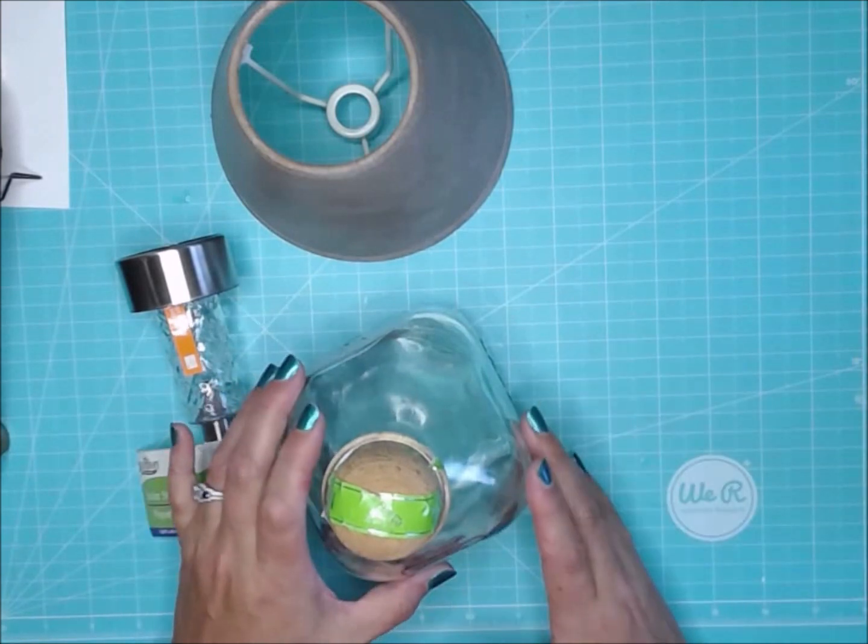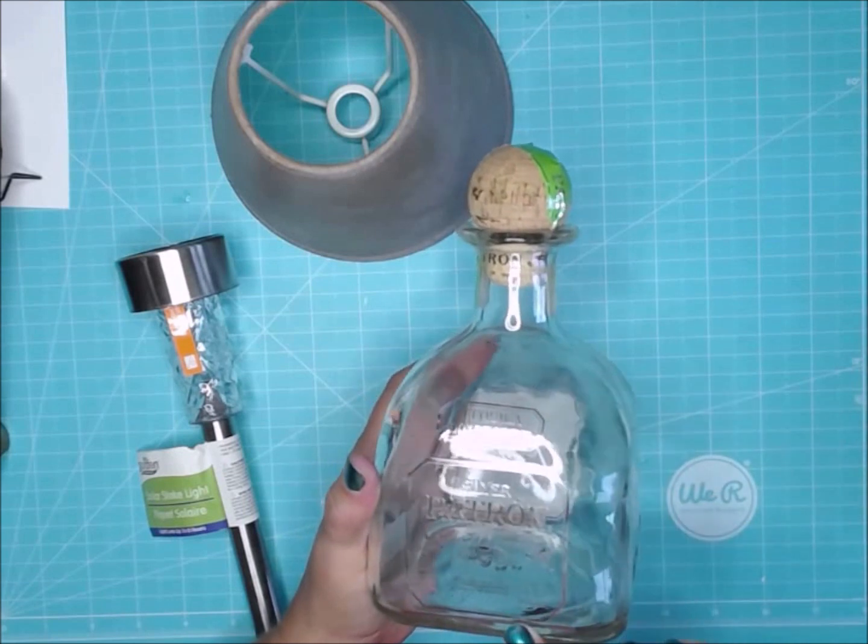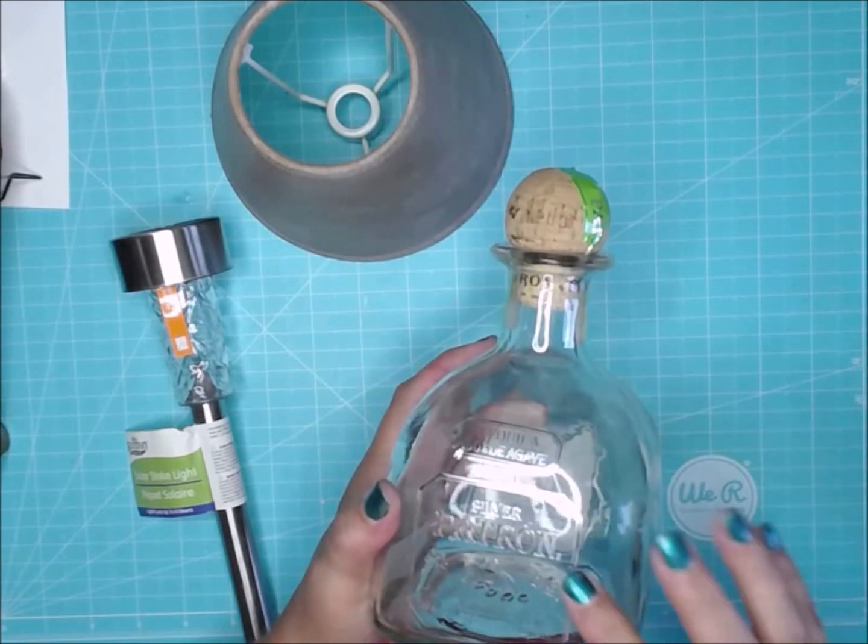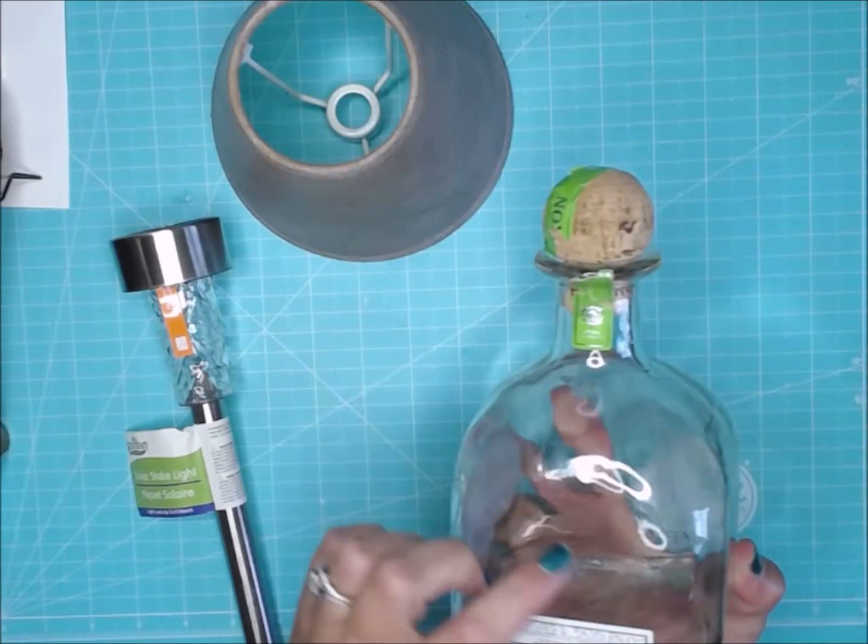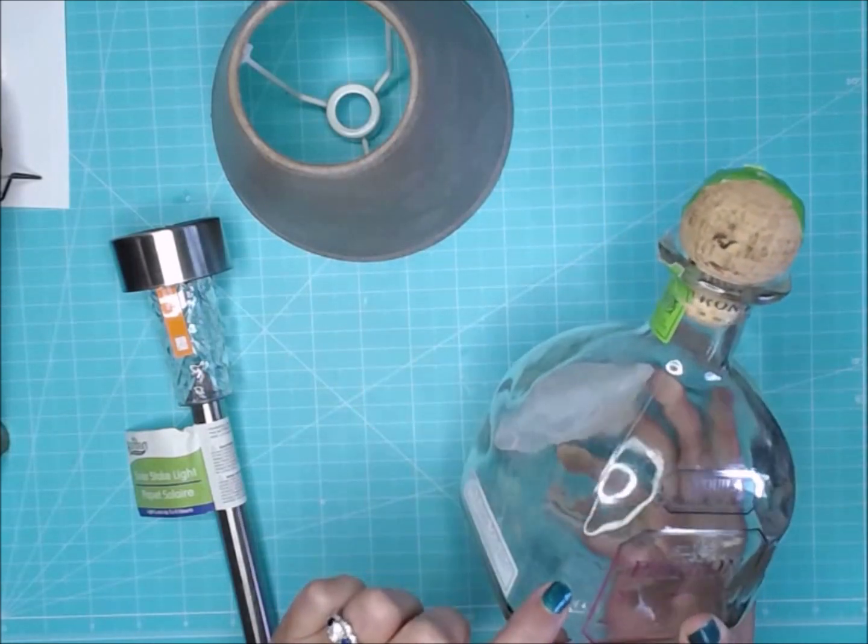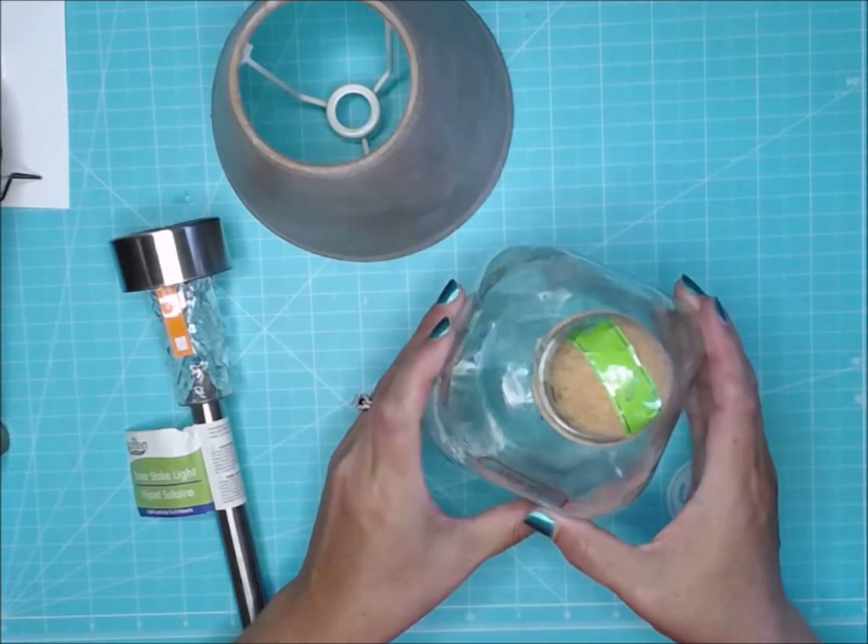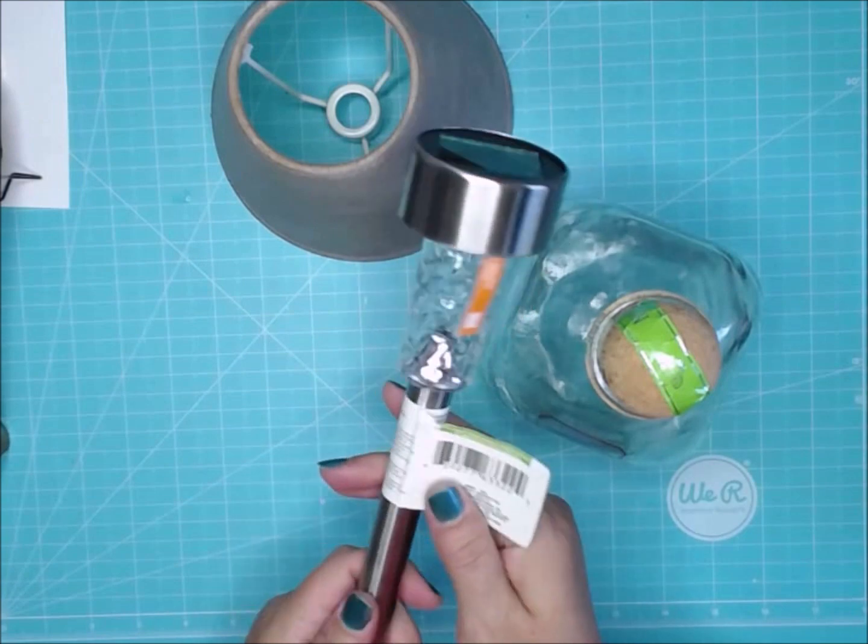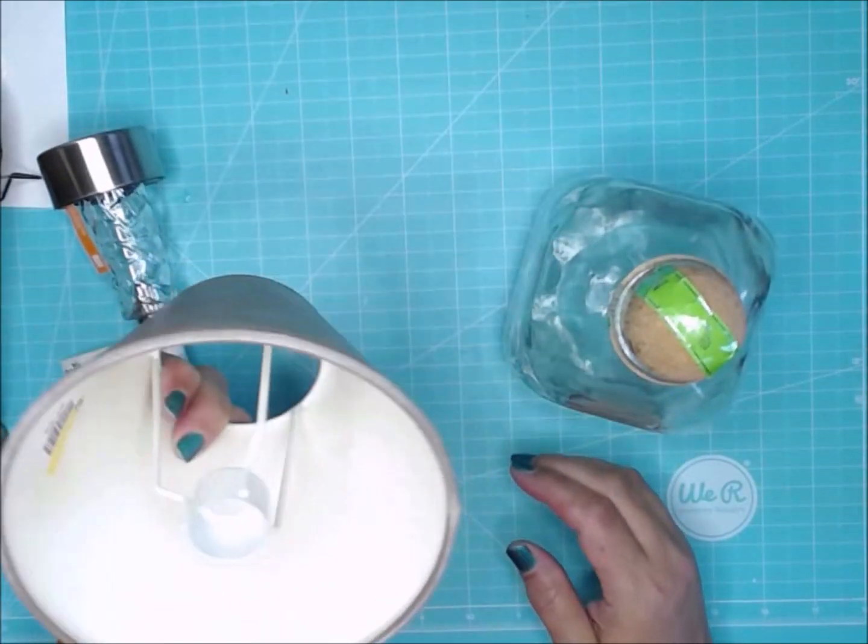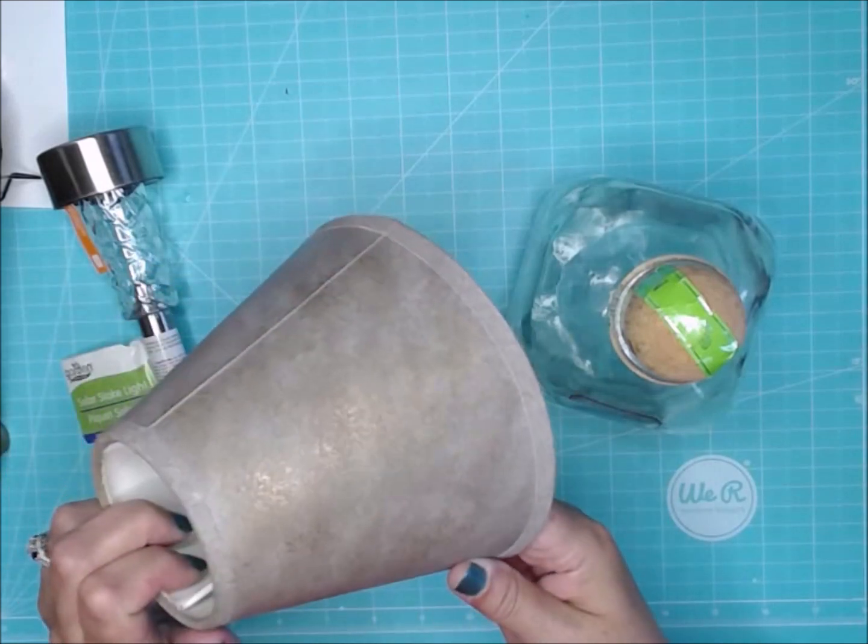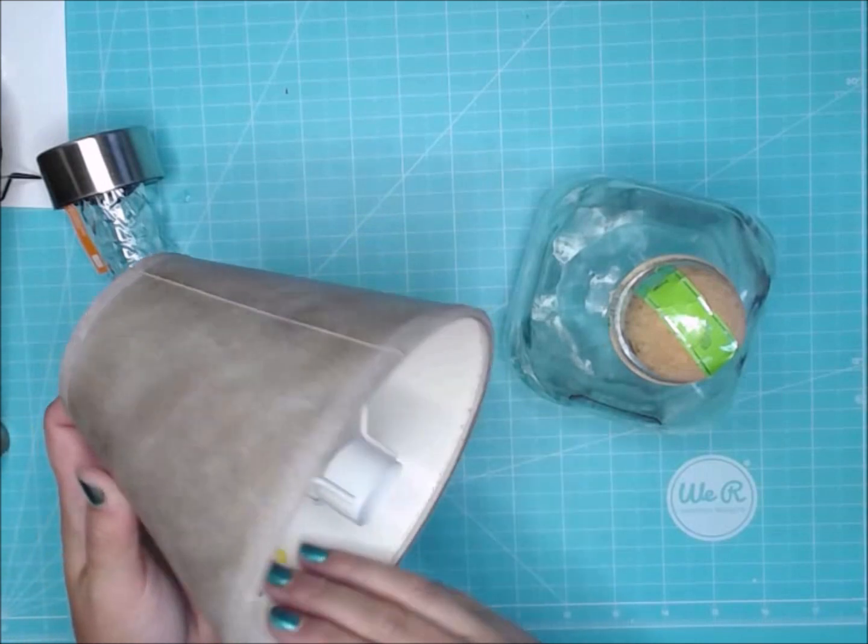For this project, what we're going to need is a bottle, and I'm just using this Patron bottle, simply because I like the shape and I like the fact that they do contain the air bubbles in them, so they're really pretty neat bottles to go with. I am going to be using a solar light from Dollar Tree, and I picked up this small chandelier lampshade at Goodwill.